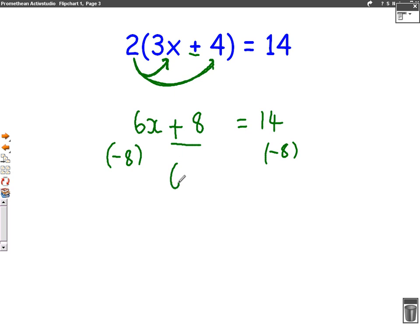So on the left side, we're left with just 6x because the 8's gone. On the right side, we had 14. We took away 8. That leaves us with 6. Now we divide both sides by the number in front of the letter. So we're going to divide both sides by 6. So we have x equals 6 divided by 6 is 1. So x equals 1 is our answer. So as you can see, that one wasn't any harder. You just had to expand out the bracket first.